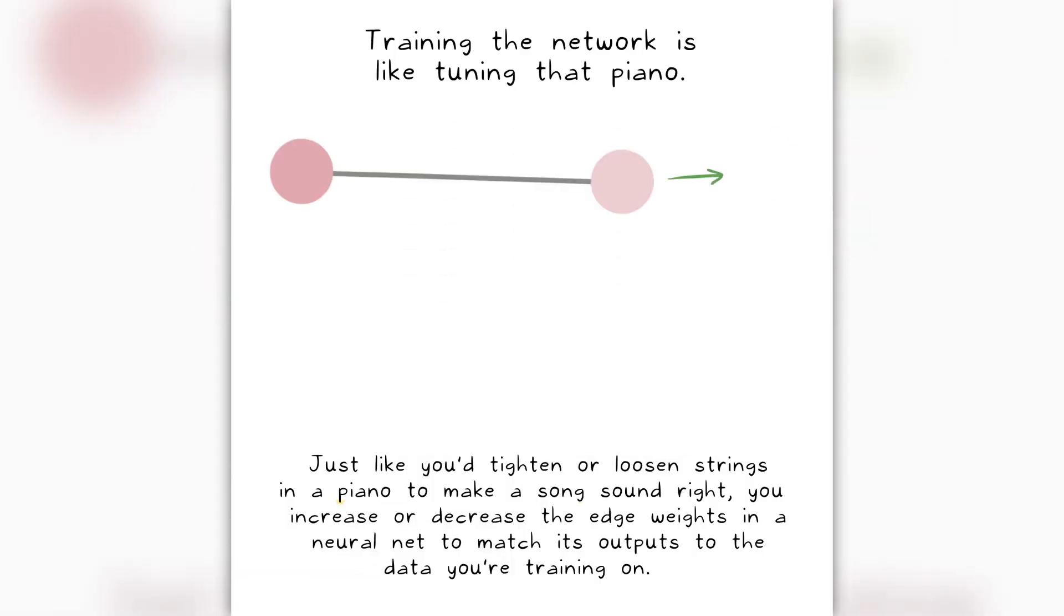Just like you'd tighten or loosen strings in a piano to make a song sound right, you increase or decrease the edge weights in a neural net to match its outputs to the data you're training on.